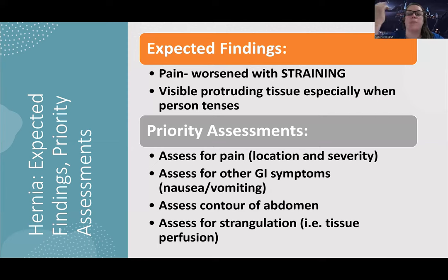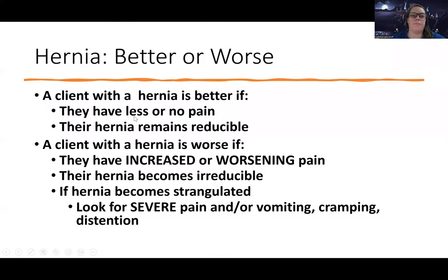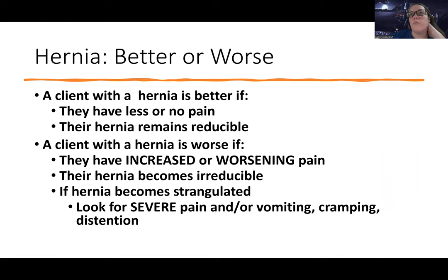When assessing for strangulation, you're looking for other signs — like projectile vomiting, a rigid abdomen — think of the signs of peritonitis. A hernia is better if there's decreased or no pain and if it remains reducible. Ideally we wouldn't have a hernia at all, but if we have to have one, we want it to be reducible. If there's increased or worsening pain, it becomes irreducible, or we see signs of strangulation — severe pain, vomiting, cramping, distension — those are warning signs.